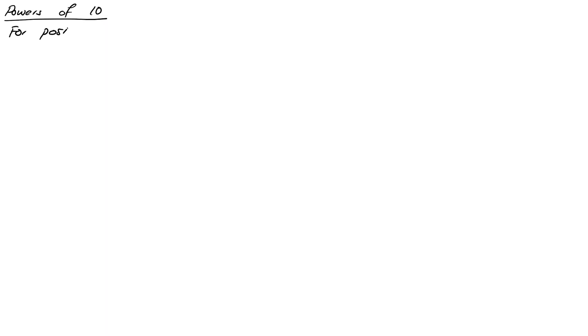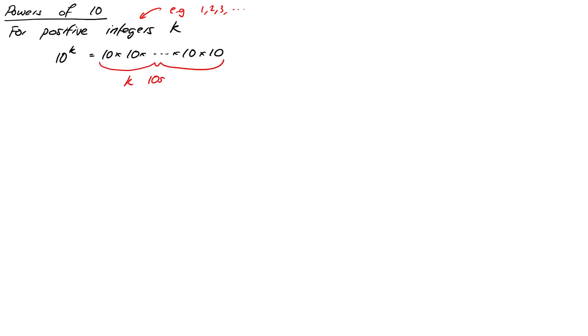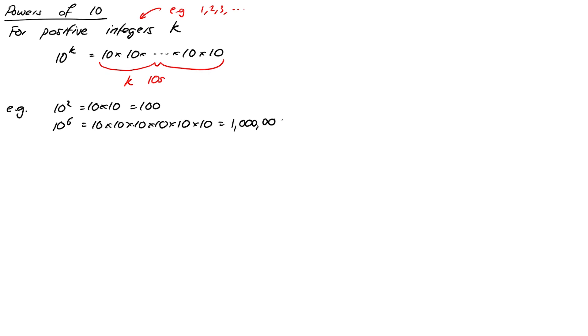We'll start with the easiest case, which is positive integer powers of 10. For positive integers k, the expression 10 to the k just means 10 times 10 times... times 10, where there are k tens overall. So for example, 10 squared is just 10 times 10, which is 100. And 10 to the 6 literally means 10 multiplied together six times, which gives us 1 million.